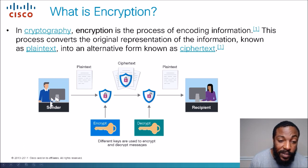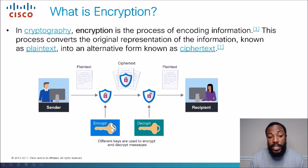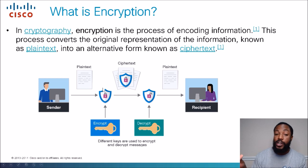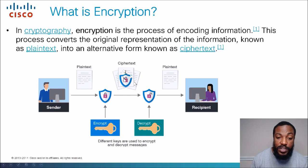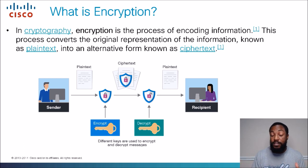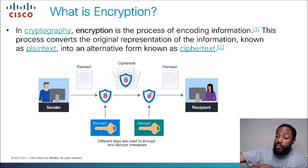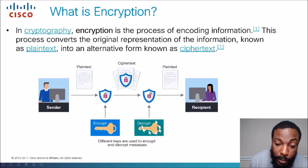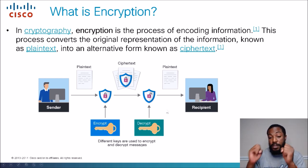Looking at this slide, we've got the sender sending plain text information. He encrypts it using several types of encryption methods — that encryption key turns it into ciphertext, which is unreadable information. That's what VPNs do — they encrypt your information. It gets transferred as ciphertext, goes across the radio waves or even on a wired network, and then the recipient has to decrypt it using a decrypting key, turning it back into plain text.